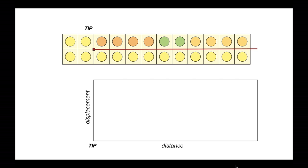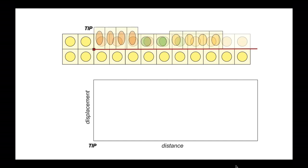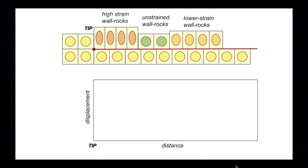We can have an orange package of rocks close to the fault tip that can deform easily, two green cells that are unable to deform at all — they're very strong — and a more intermediate type of behaviour on the right-hand side. Deforming these units shows the response is variable across the hanging wall. Most striking are the two green cells, which have not deformed, so the original circular markers remain circular — they've simply been translated along the fault plane. We thus have high strain wall rocks, unstrained wall rocks, and lower strain wall rocks across the model.